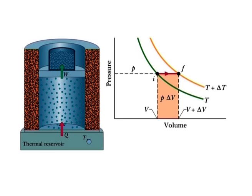Molar specific heat at constant pressure. We now assume that the temperature of our ideal gas is increased by the same small amount delta T as previously, but now the necessary energy is added with the gas under constant pressure. The heat Q is related to the temperature change by Q = n·Cp·delta T. Here Cp is a constant called the molar specific heat at constant pressure. Cp is greater than Cv because energy must now be supplied not only to raise the temperature but also for the gas to do work — that is, to lift the weighted piston.